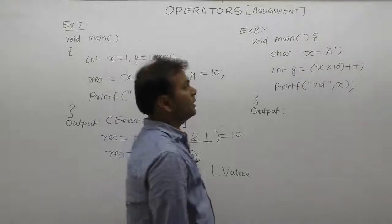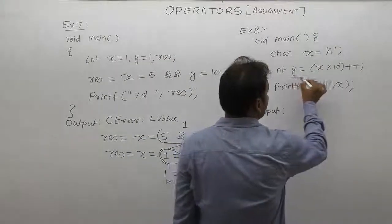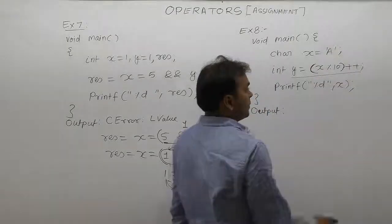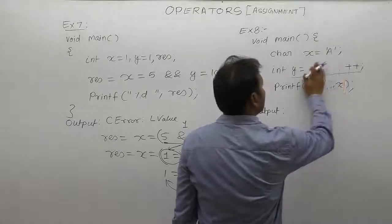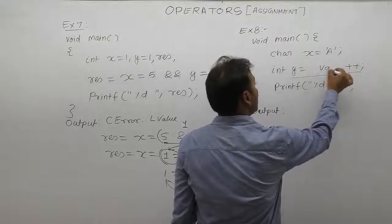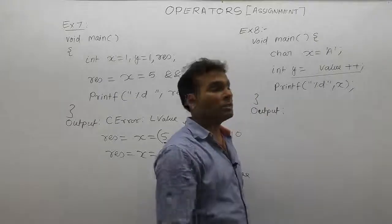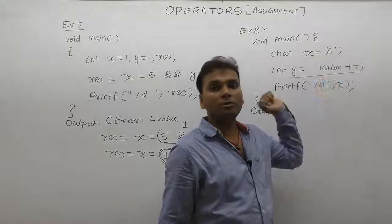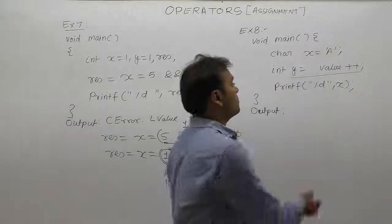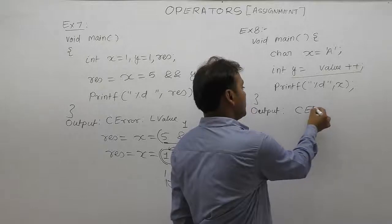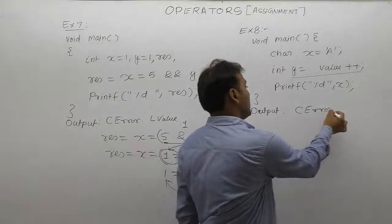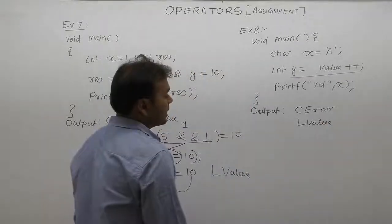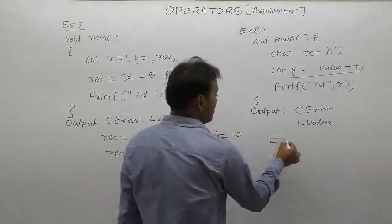Next one: when solving this expression, first the bracket is solved. When the result comes, it will be in the form of a value. Logically, plus plus is being applied to a value. You cannot increment a value, therefore again compile-time error with error message: L-value required.